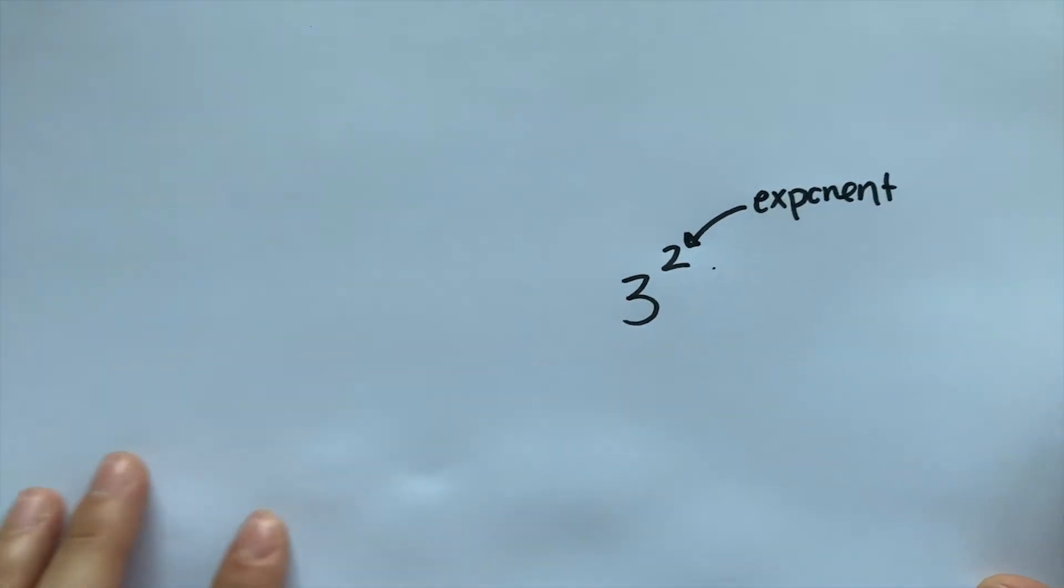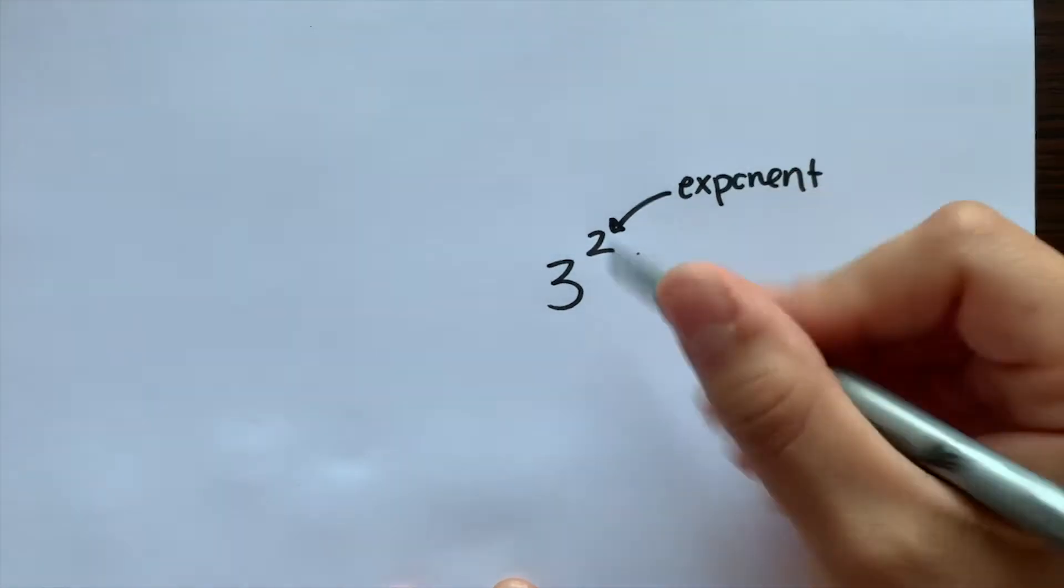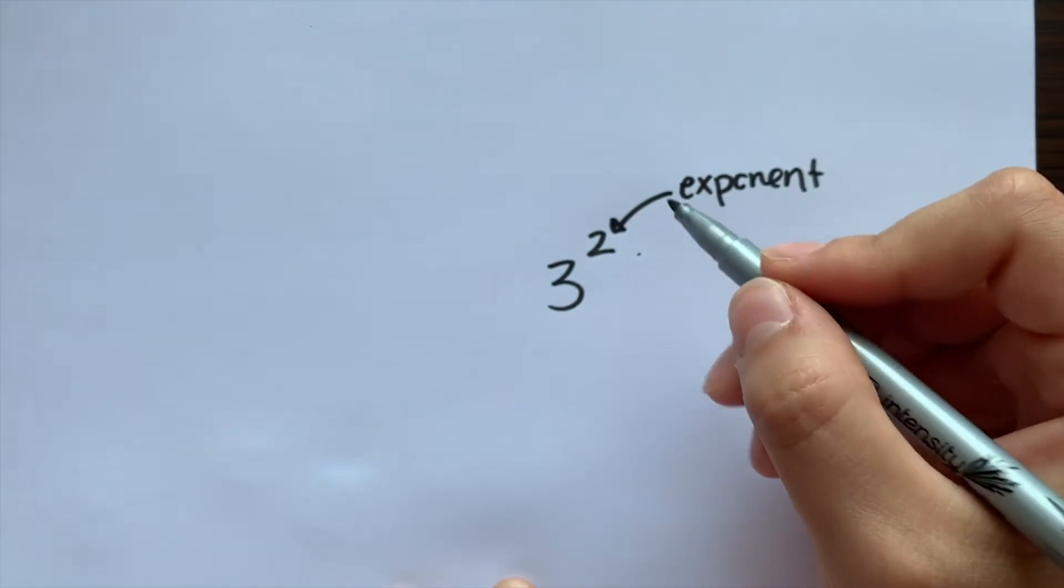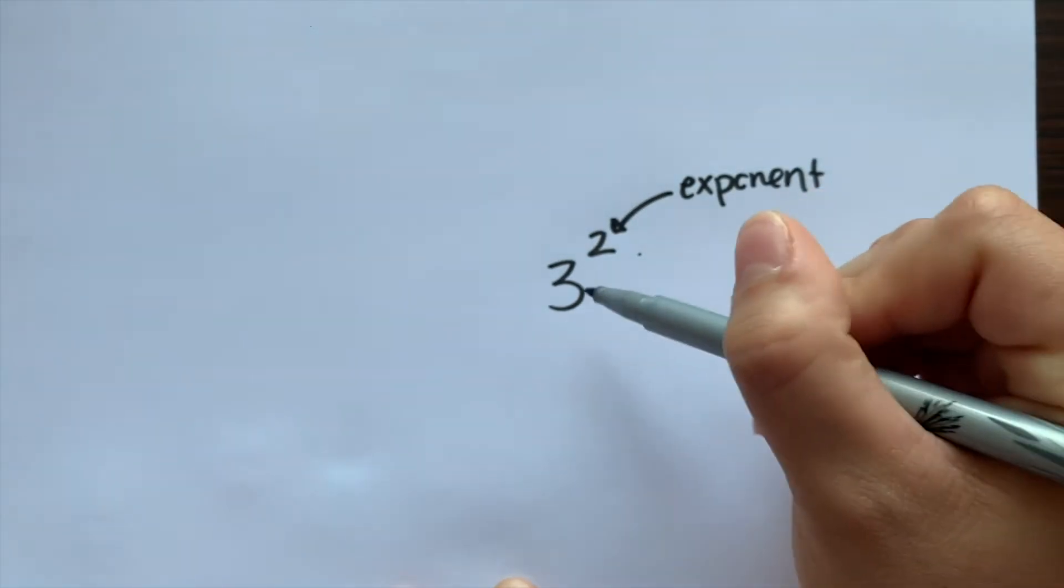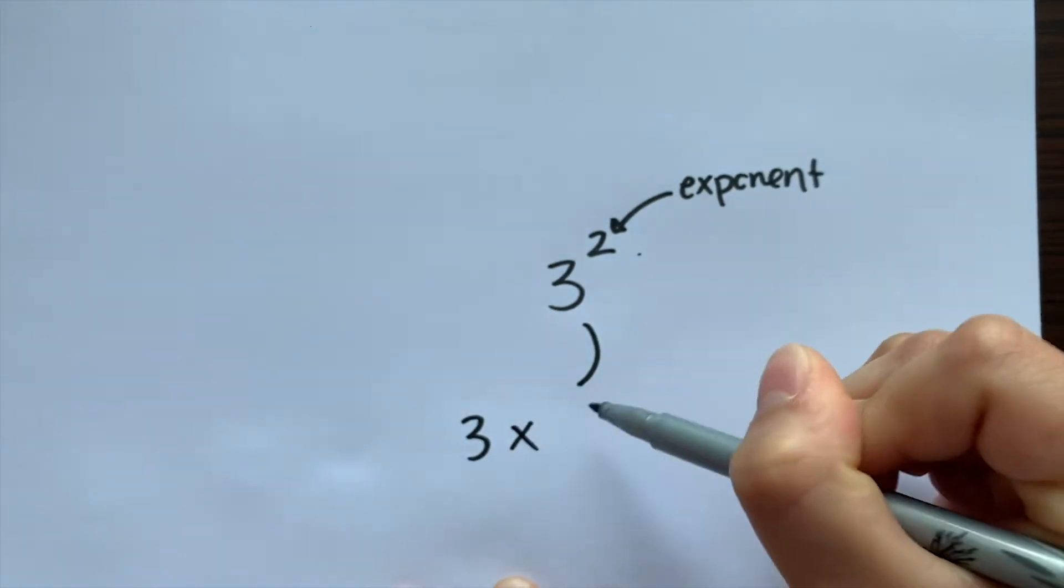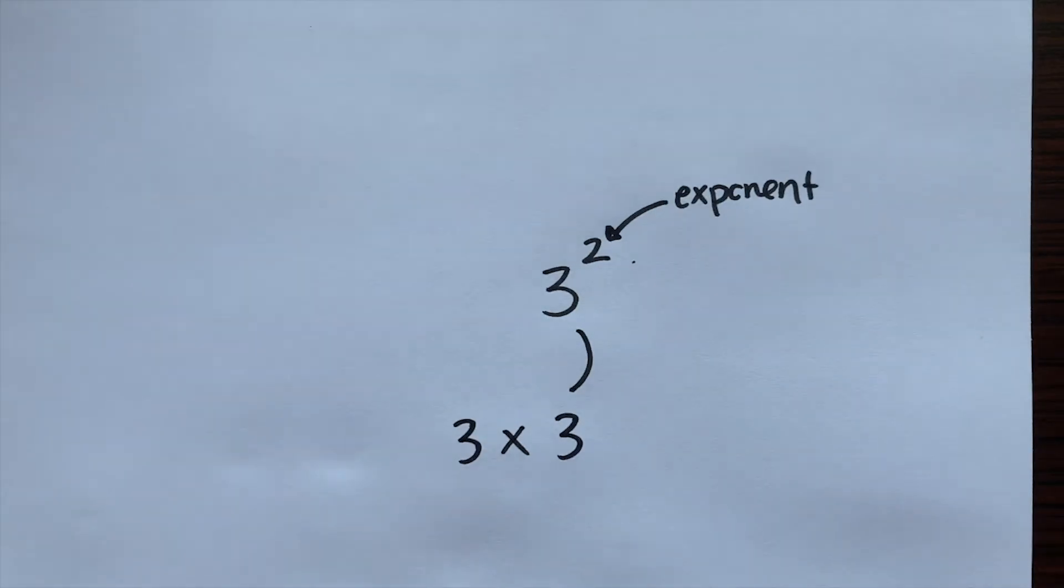And what exactly does that mean? Basically what that's telling you is that we're going to multiply three by itself twice. So this translates to that. And it's like that for every number. I will show you some more examples, different exponents to work with.